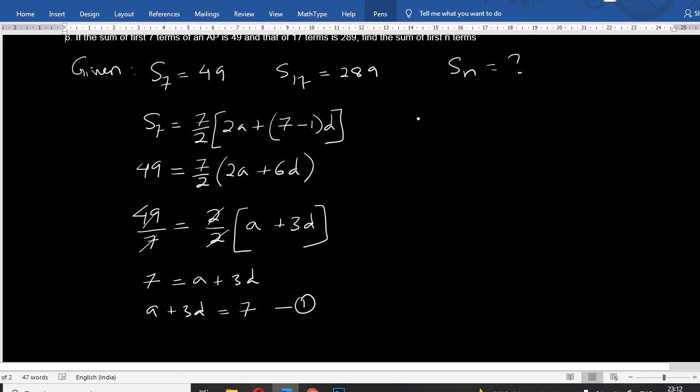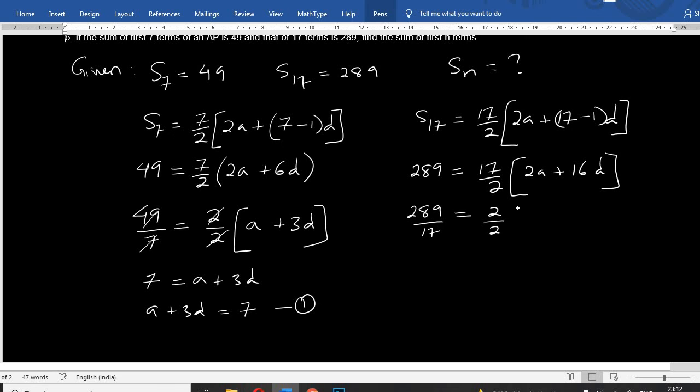S17 is: S17 equals 17 by 2, 2A plus 17 minus 1 D. S17 is 289. 289 equals 17 by 2, 2A plus 17 minus 1, 16D. 289 equals 17 A plus 8D, or A plus 8D equals 17. Equation 2.